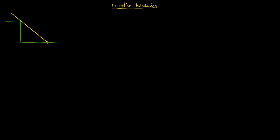Hello, let's start with exercise 1. A homogeneous rod of weight MG and length 2L leans against the wall through a horizontal cable as shown. Calculate the components of the reaction R' and the tension T.